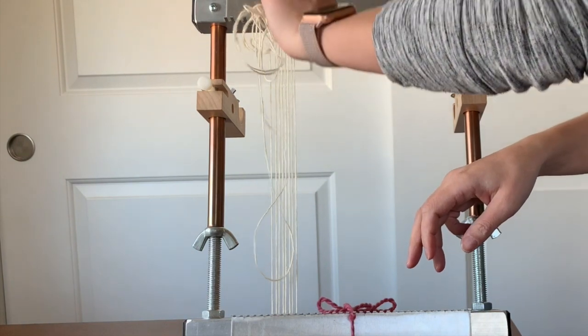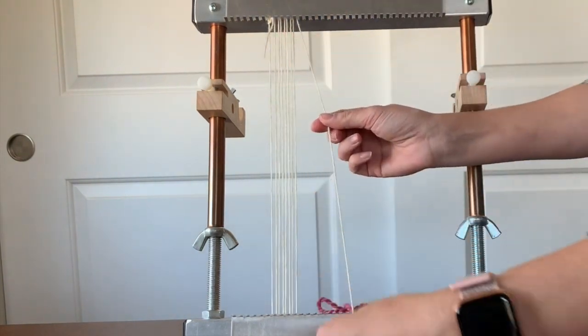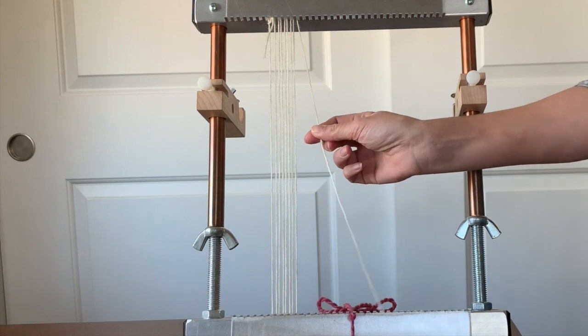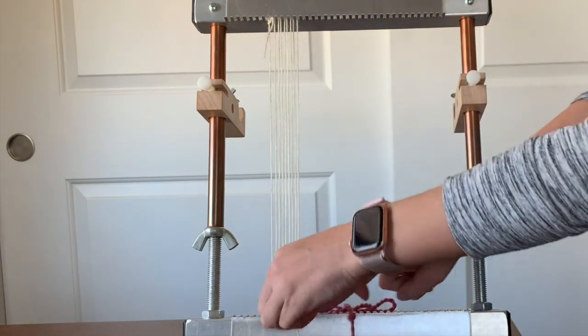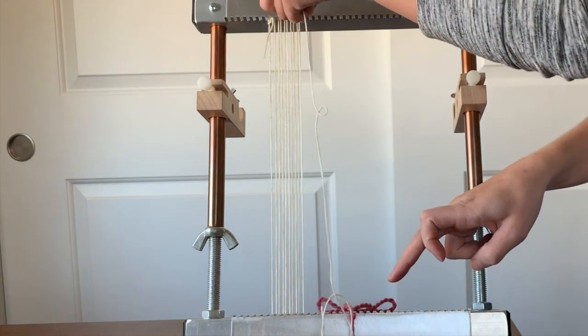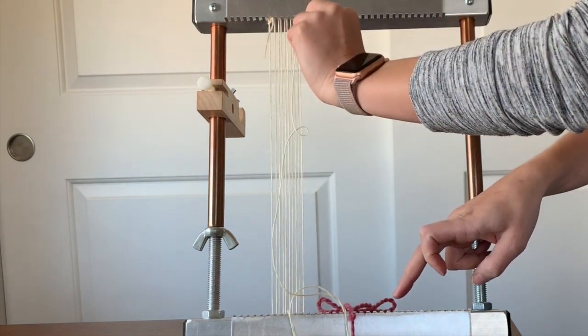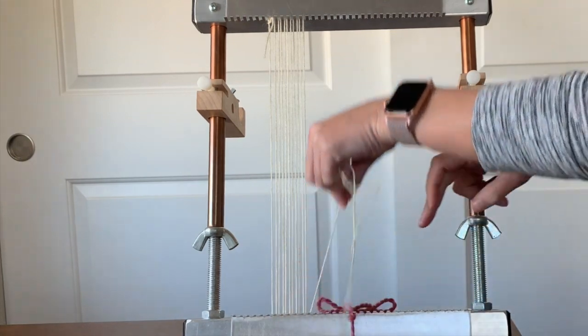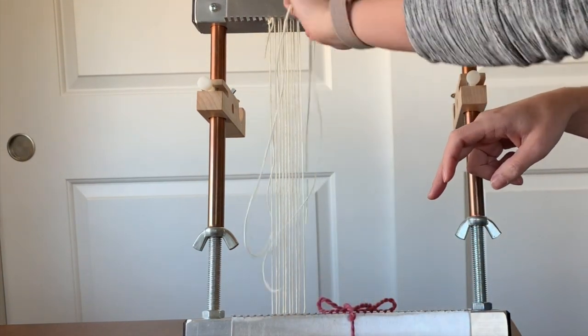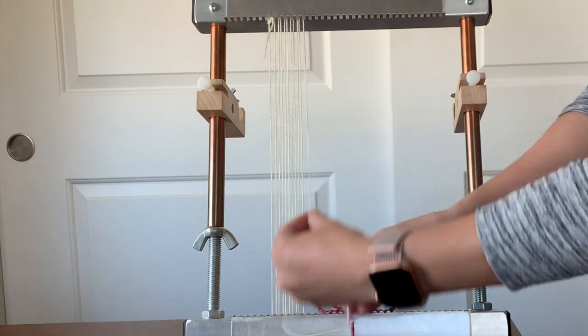Now one of the advantages of this type of warping method on a Merrick's loom is that you don't need to make sure your tension is tight when you do this. You just need to make sure it's even because you can go and adjust the tension once you have already warped your piece.